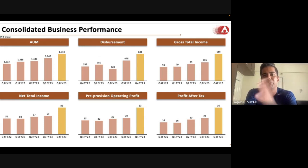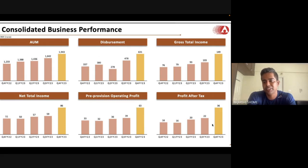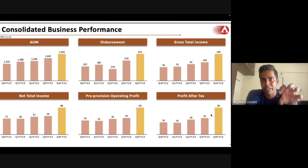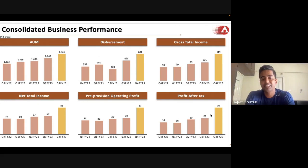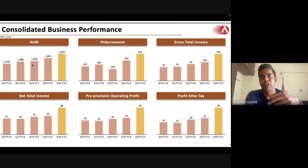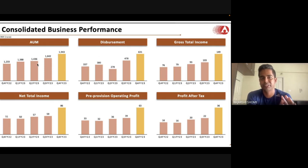You can pause the video to check the last four to five quarters of performance. One important note: in the last three quarters before Q4, Arman invested heavily in technology — moving to a cashless LOS/LMS system for sourcing, disbursal, and collections. As a result, AUM growth between Q1 and Q2 was slower, and management was clear about this on the call. But once digitization was complete, you can see the boom in AUM.